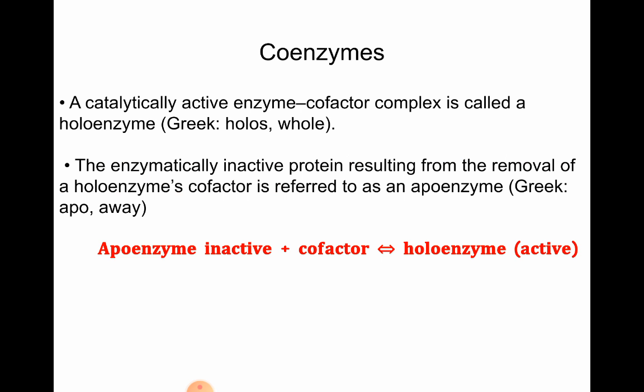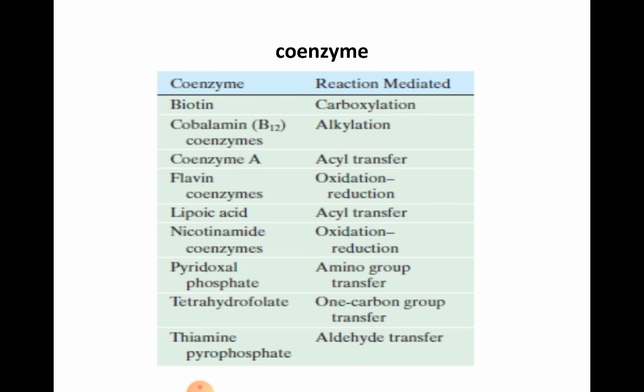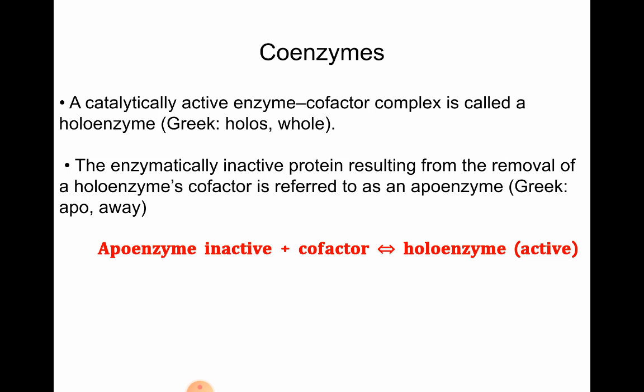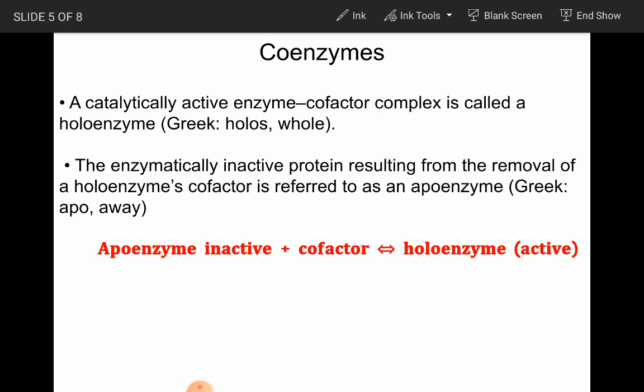A catalytically active enzyme plus cofactor complex is called a holoenzyme — it is a complete enzyme. The enzymatically inactive protein resulting from the removal of a cofactor from a holoenzyme is referred to as an apoprotein. In simple terms, the apoenzyme is the protein part; protein part plus cofactor is called the holoenzyme, which is the active enzyme.